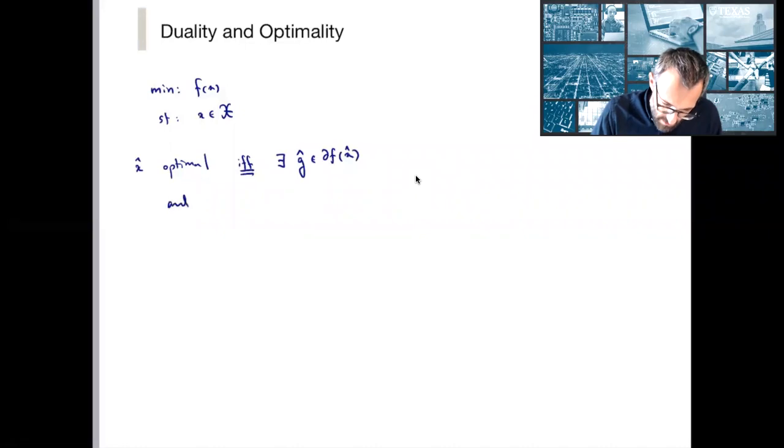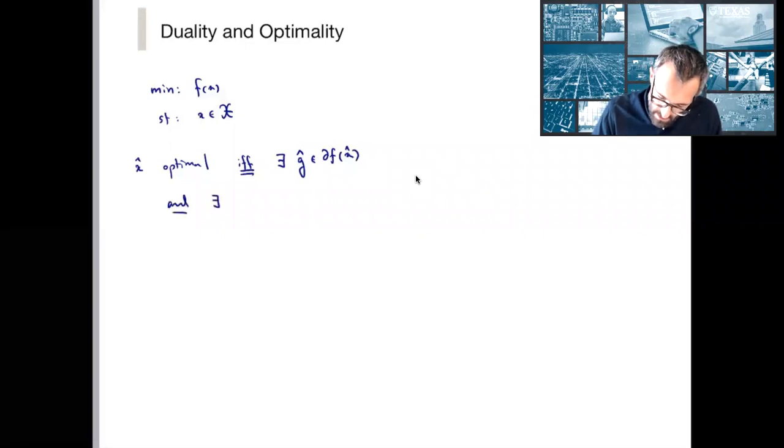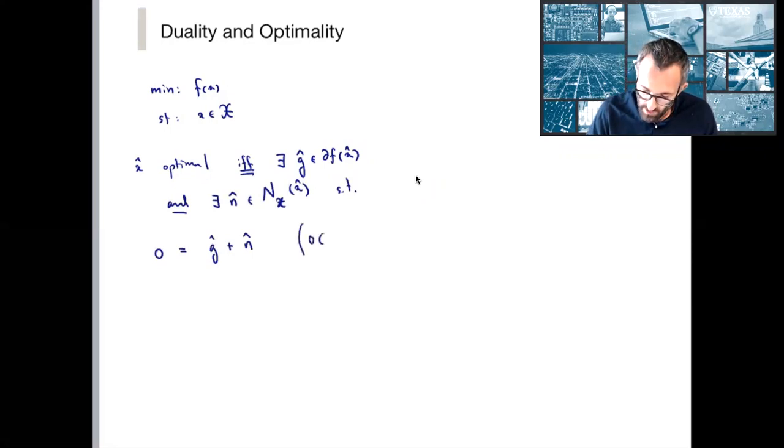And there exists some vector, I'll call it n-hat, in the normal cone of the convex set X at the point x-hat, such that 0 is equal to g-hat plus n-hat. You may have seen this written differently as 0 is an element of the subdifferential of f at x-hat plus the normal cone of X at x-hat.